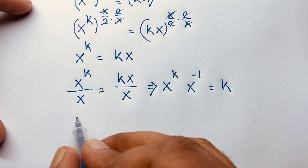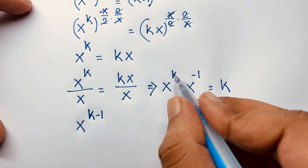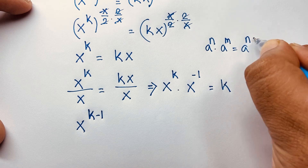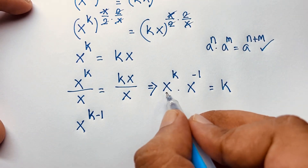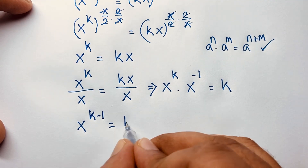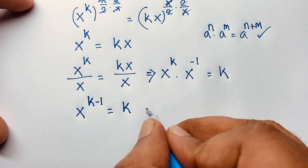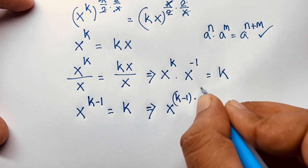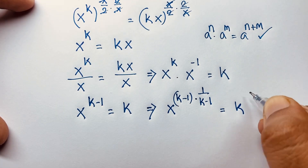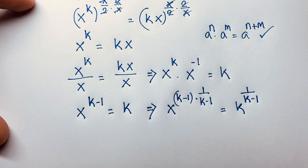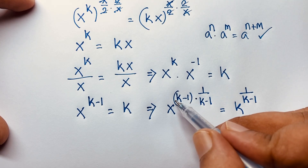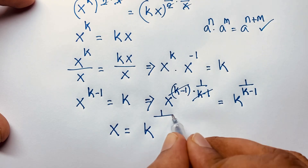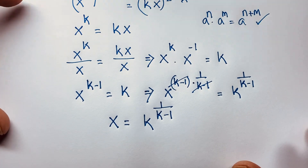According to the exponential law — a to the power n times a to the power m equals a to the power n plus m — I add the exponents: x to the power k minus 1 is equal to k. Now I raise both sides to the exponent 1 over k minus 1. The left side cancels out, giving x is equal to k to the power 1 over k minus 1. This is the value of x.